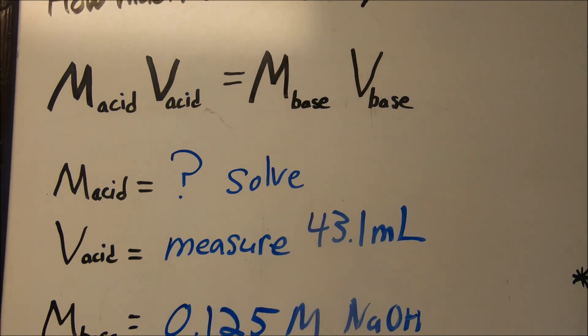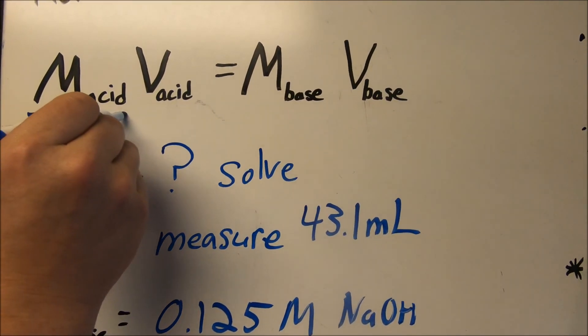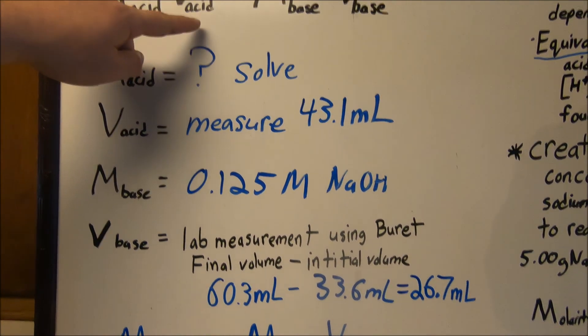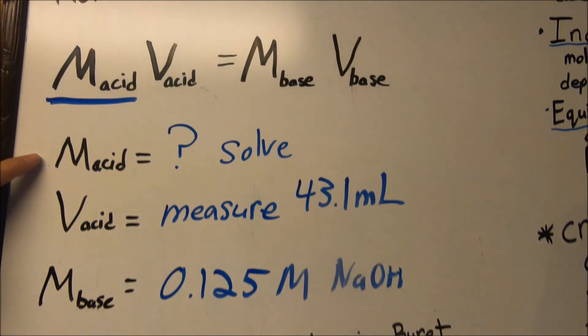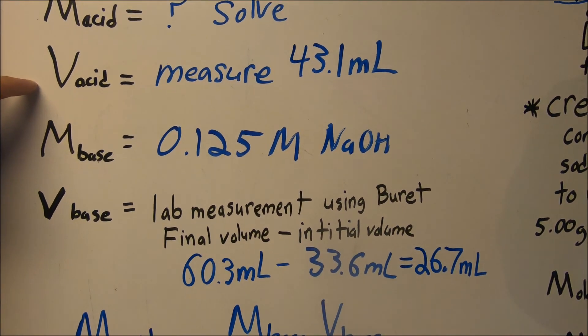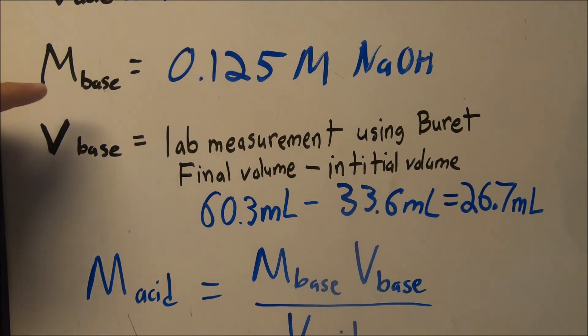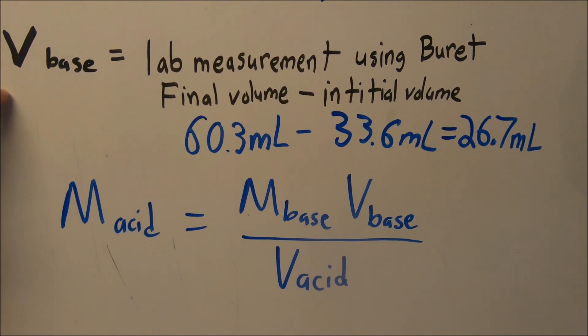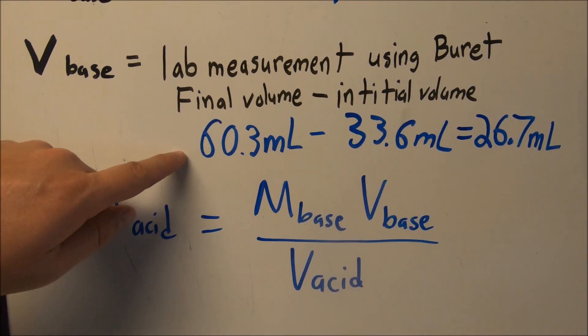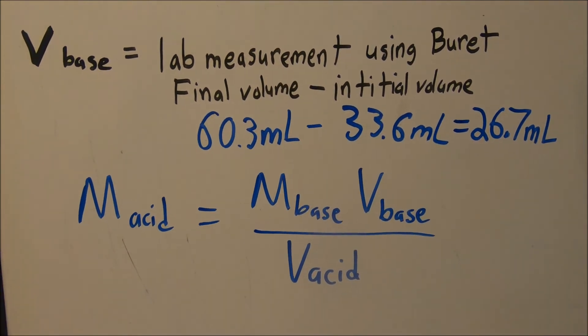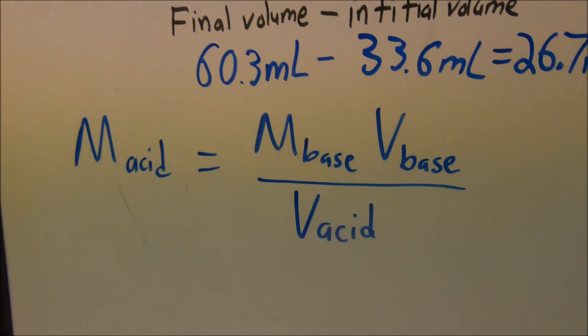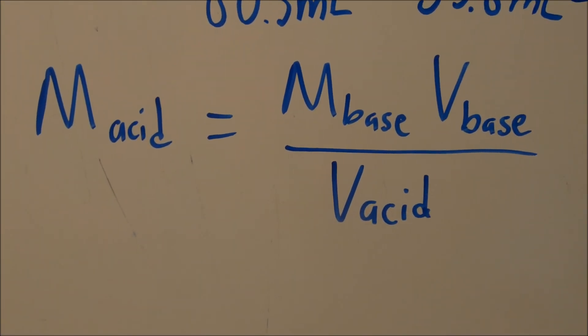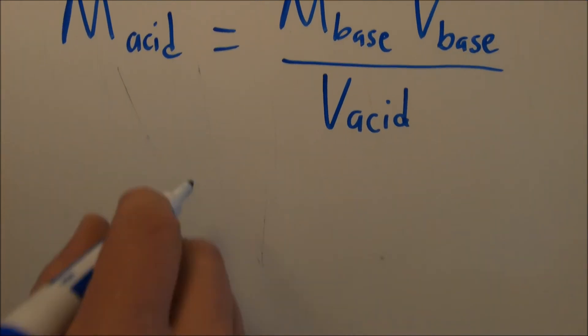Now we are going to solve for that molarity of the acid. To solve for the molarity of the acid, we're going to rearrange the equation divided by the volume of the acid. Molarity of acid is what we were solving for, volume of the acid is what we measured, that's the amount of soda we started with. Molarity of the base was that known concentration that we prepared ahead of time. The volume of the base: we ended at 63.3, starting at 33.6, so final minus initial is 26.7 milliliters. Molarity of the acid equals molarity of the base times volume of base divided by volume of the acid.